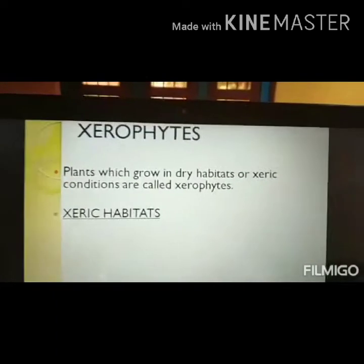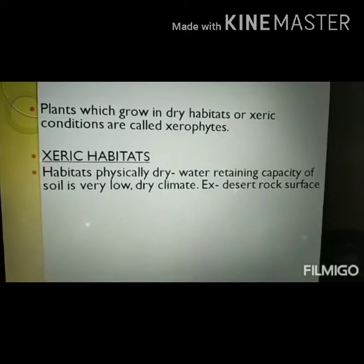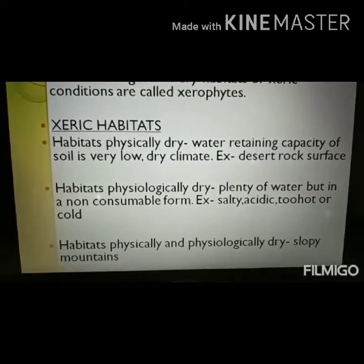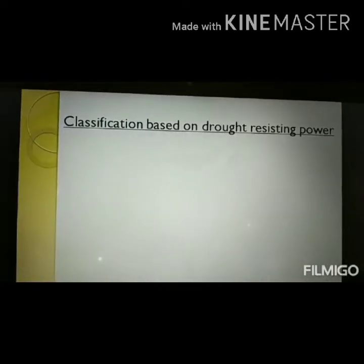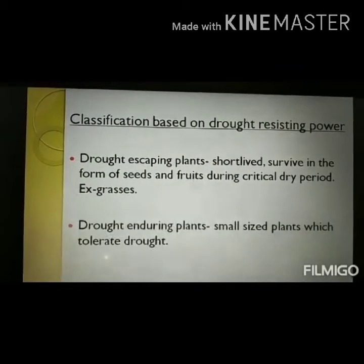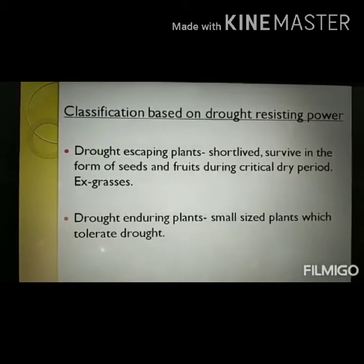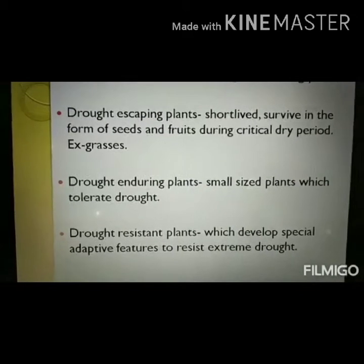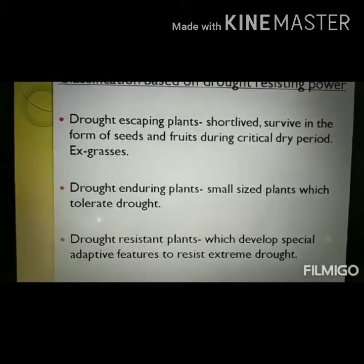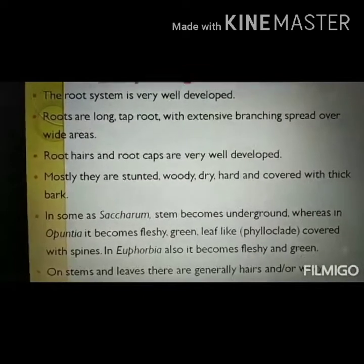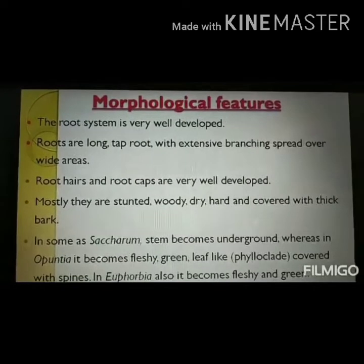Next are xerophytes. We will look at their morphological and anatomical adaptations. Xerophytes generally grow in dry conditions, which may be physically or physiologically dry. Based on drought resistance, they are classified into three groups: drought escapers, which escape drought conditions; drought enduring plants; and drought resistant plants.